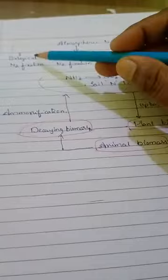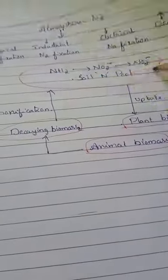So the nitrogen cycle involves: biological, industrial, or electrical nitrogen fixation producing nitrogen oxides; these nitrates are taken up by plants; passed to animals; upon decay ammonia is formed through ammonification; ammonia is oxidized to nitrites and nitrates through nitrification; and finally nitrates are reduced back to N₂ through denitrification. The five steps are: nitrogen fixation, assimilation, ammonification, nitrification, and denitrification. Then N₂ is recycled and the cycle continues.